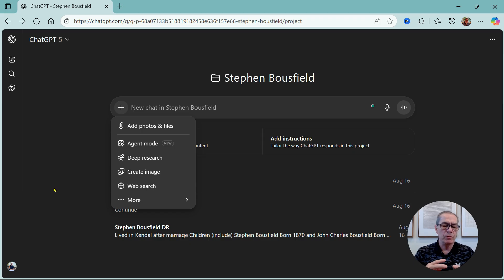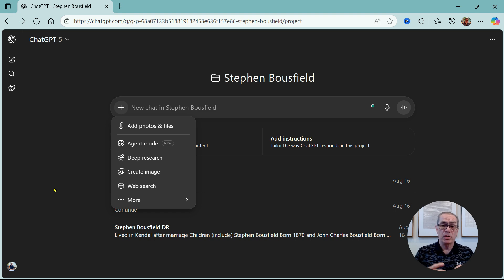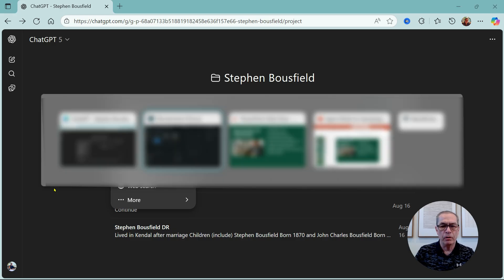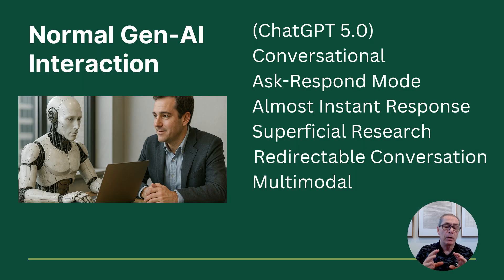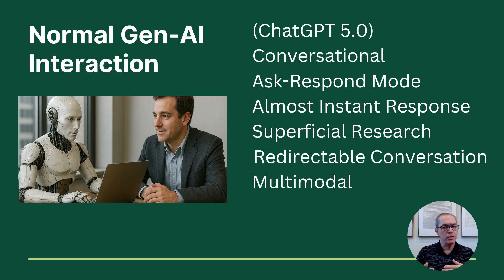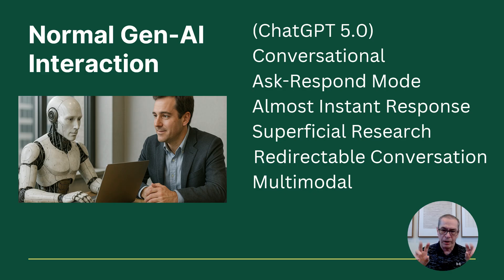So what is agent mode? How can we use it? How is it different to other things? Let me use a PowerPoint presentation to help us think about how to use it. I did a video — and I'll link to it at the end — looking at deep research and normal gen AI interaction. Let's review how normal gen AI, in this case ChatGPT 5.0, works.